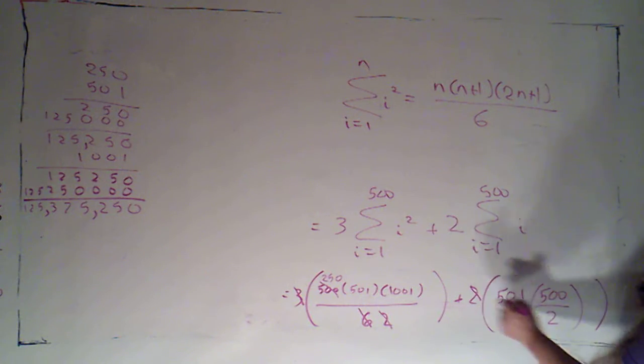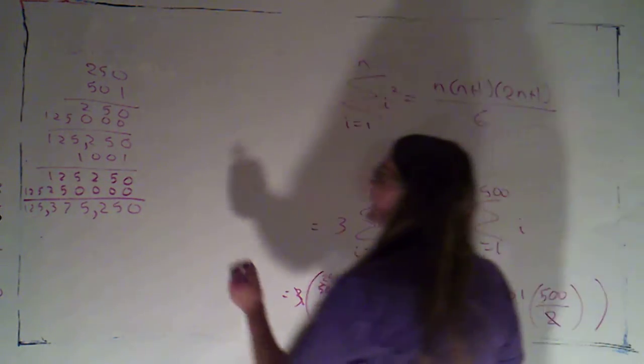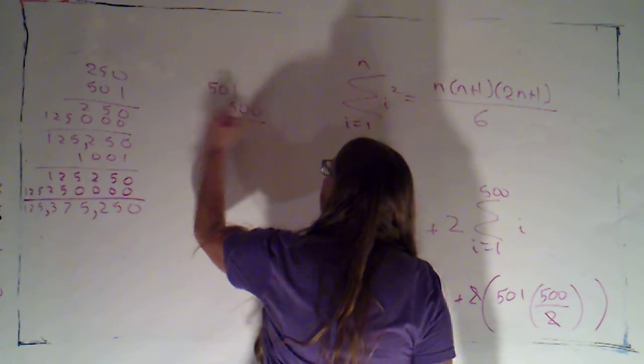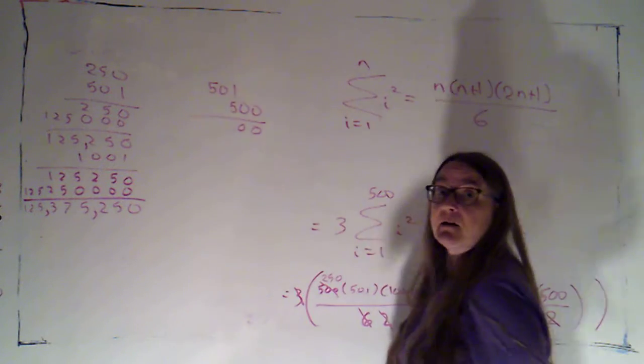That's what we got from this piece. Then here I can cancel the two and the two. And now we've just got five hundred and one times five hundred. Neat little trick.